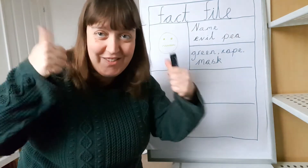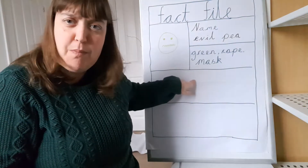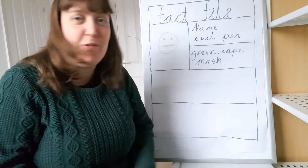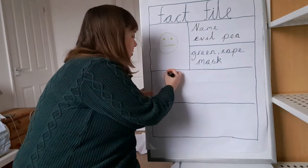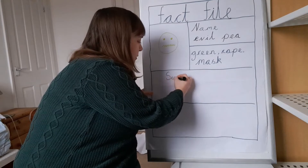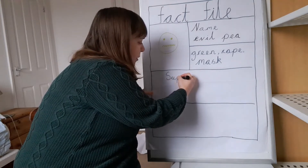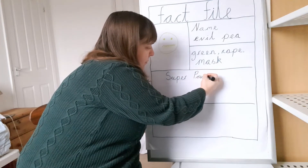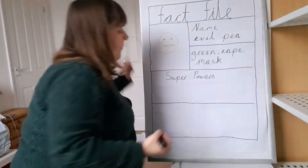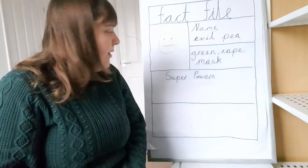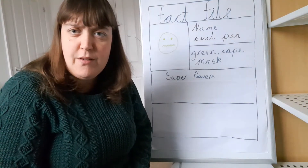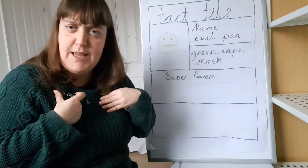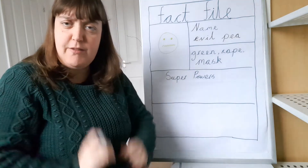Right, did you do it? Fantastic! What we're going to do now - can you remember what goes in this box in the story map? That's right, the superpowers! So I'm going to try the title: super powers. What are his super powers? I think he is very mean. He is very mean. So we're going to have a go at writing that sentence.